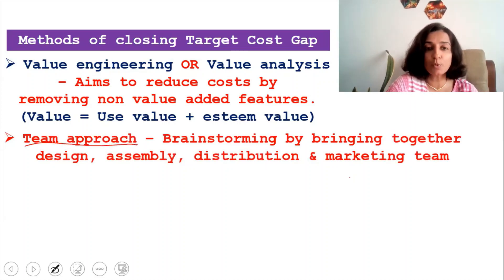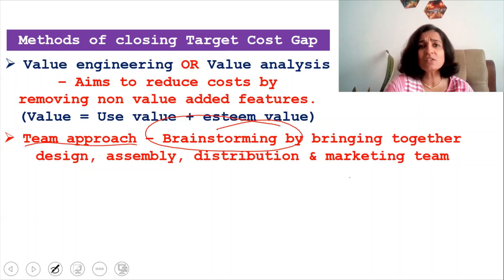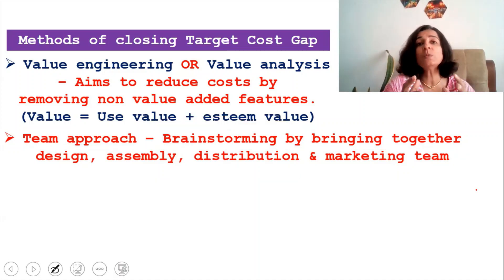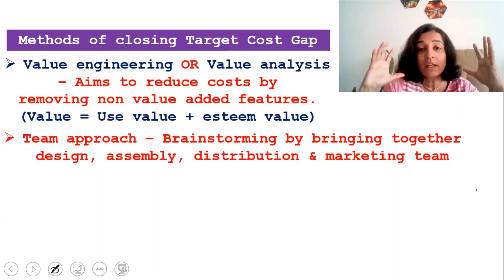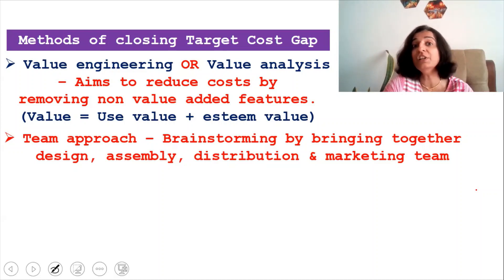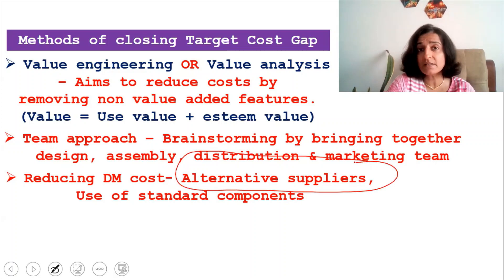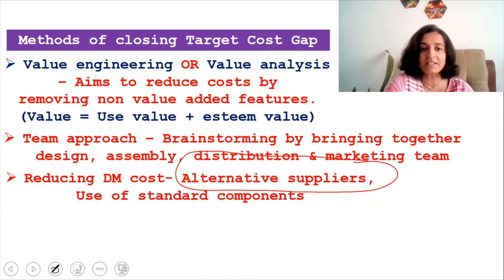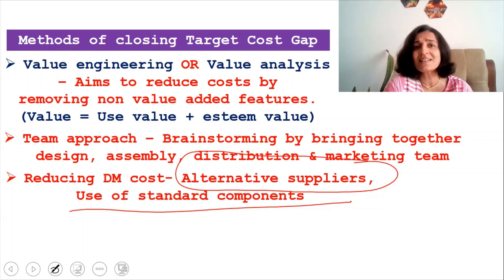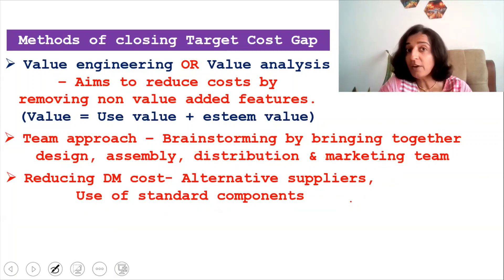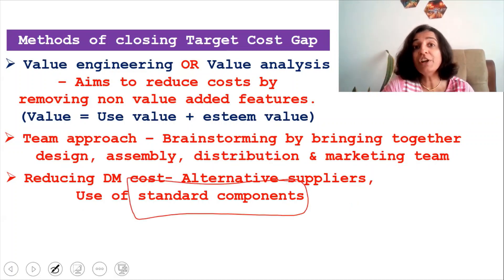The next method is the team approach — brainstorming. This means a group discussion bringing together the design, assembly, distribution and marketing teams. All these people can contribute greatly towards the design of the product, and if all ideas are pooled together, we will find ways and means of reducing the cost. The third method is reducing the direct material cost. We could look for alternative suppliers who provide the raw materials at a reduced cost without affecting the quality, and use standard components. Standard components are already available in the market, whereas customized components are much more expensive. So if possible, go for standard components.